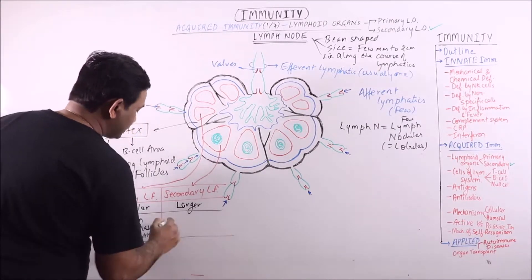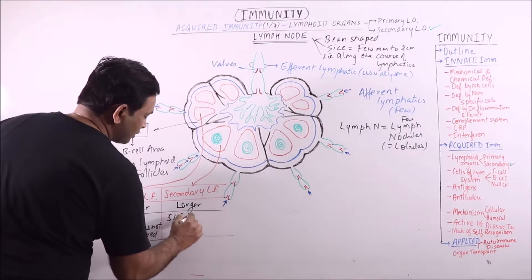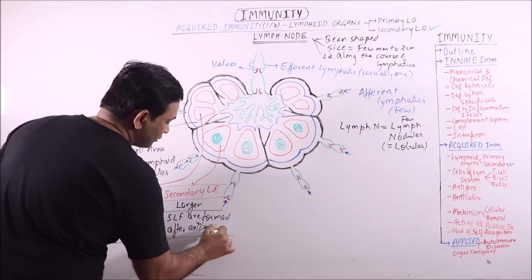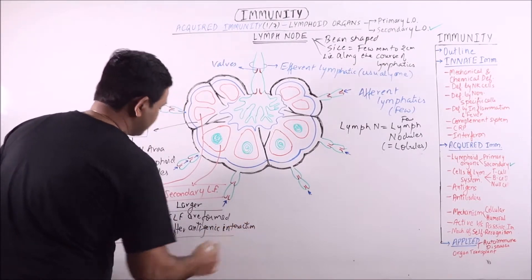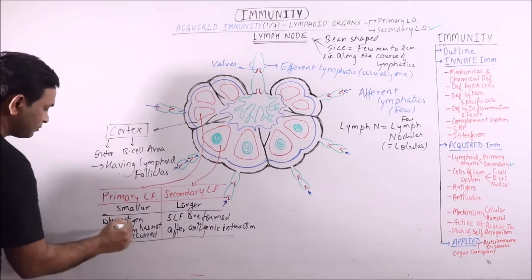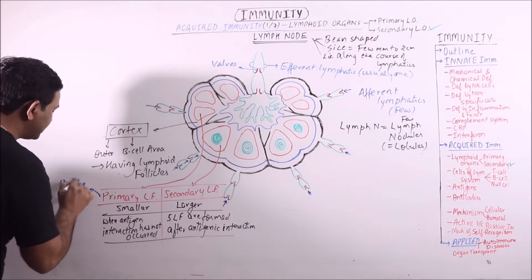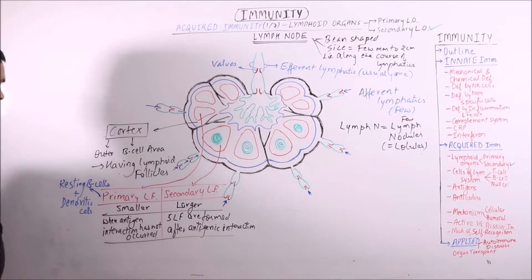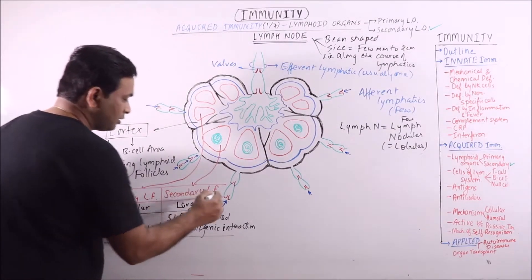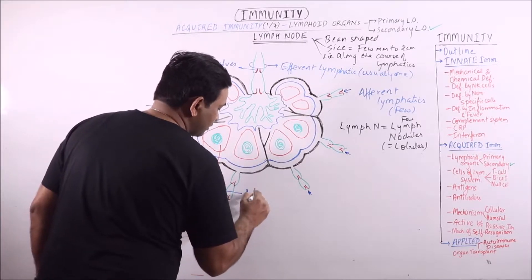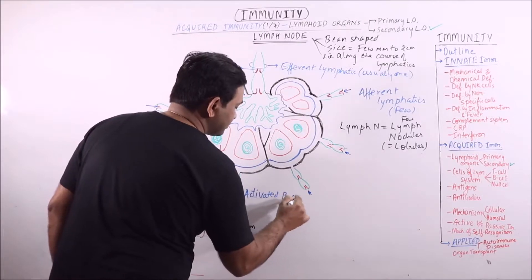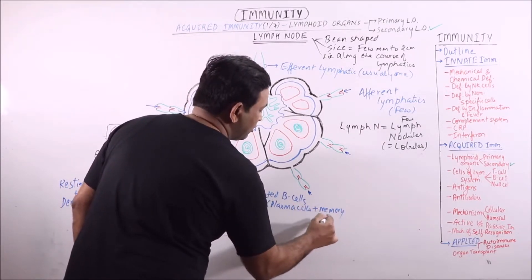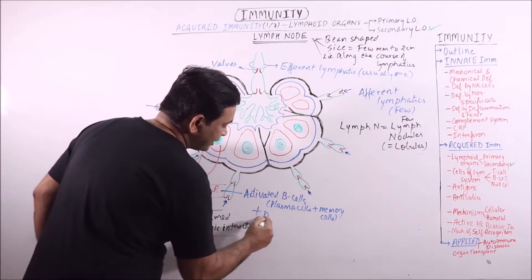Secondary lymphoid follicles are formed after antigenic interaction. Primary lymphoid follicles contain resting B cells and dendritic cells, which capture and process the antigen. Secondary lymphoid follicles contain activated B cells, that is plasma cells, memory cells, and dendritic cells.